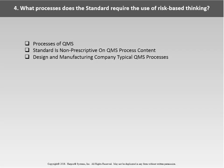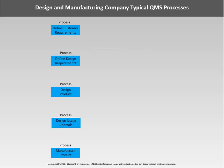The standard is non-prescriptive — it doesn't say you have to manage risk at specific points. What it does say is: whatever processes you have in your quality management system, you must manage risk. So you get to define what processes make up your QMS. We're going to look at a typical design and manufacturing company, which typically has five core processes.